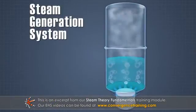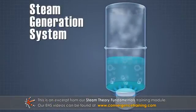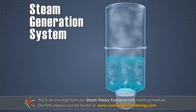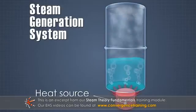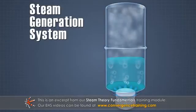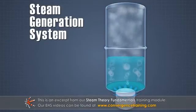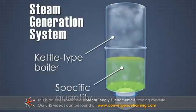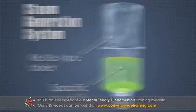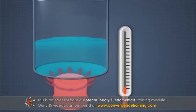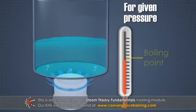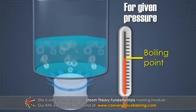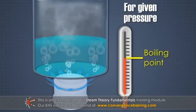A steam generation system must provide a continuous and uninterrupted heat source for this conversion. The simplest steam generating equipment is a kettle type boiler which heats a specific quantity of water. As heat is applied, the water temperature increases. Eventually, for the given pressure, the boiling point or saturation temperature is reached.